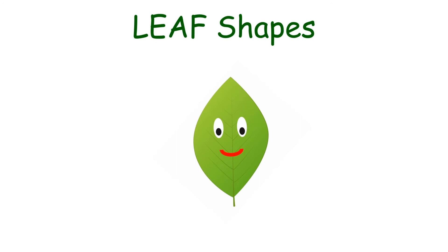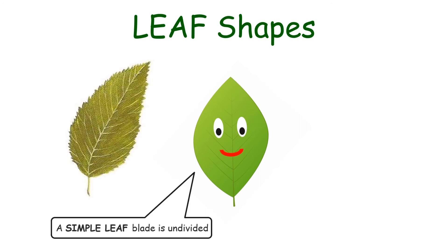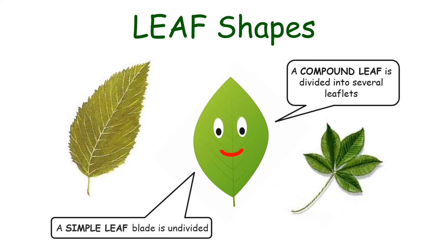Leaf shapes. A simple leaf blade is undivided. A compound leaf is divided into several leaflets.